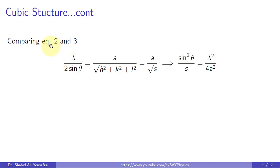Now comparing the d_hkl from equation 2 and 3, defining s = h² + k² + l² and squaring both sides yields sin²θ / s = λ² / (4a²).